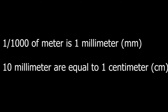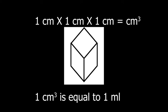One thousandth of a meter is 1 millimeter. 10 millimeters equal 1 centimeter. Volume or how much it holds: 1 centimeter by 1 centimeter by 1 centimeter equals 1 cubic centimeter or 1 milliliter or 1 cc.